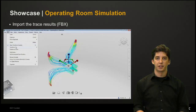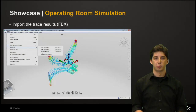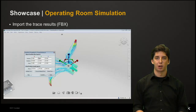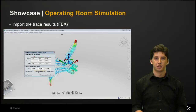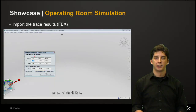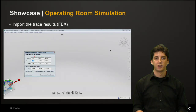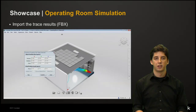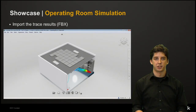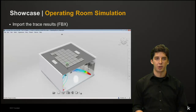Then go to edit, transform, and transform properties. The traces come in rotated at nine degrees so set the X rotation to zero and you should see the traces fly into place. And there you can see our traces fit perfectly in our model.